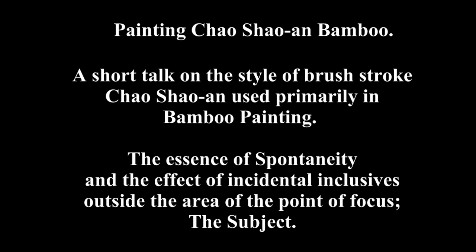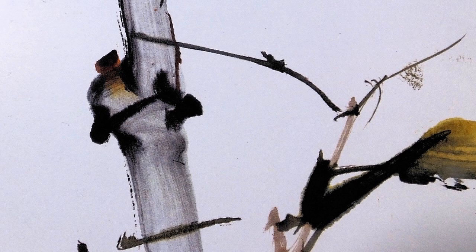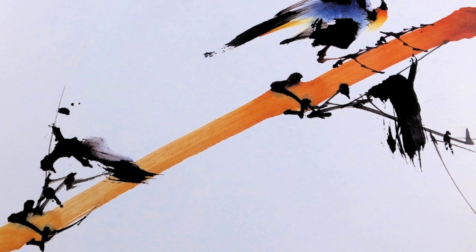This is a short talk on the style of brushstroke that I see from Chao Shao'an's work, used primarily in bamboo painting. The essence of spontaneity and the effect of incidental inclusives outside the area of the point of focus, mainly the subject. In the following images, there are Chao Shao'an's works showing the style of brushstroke he deployed in his paintings.